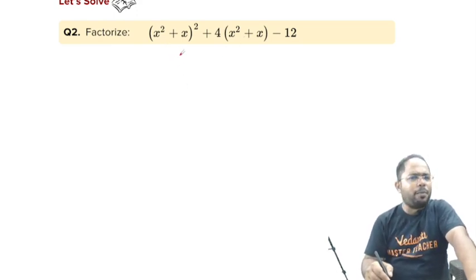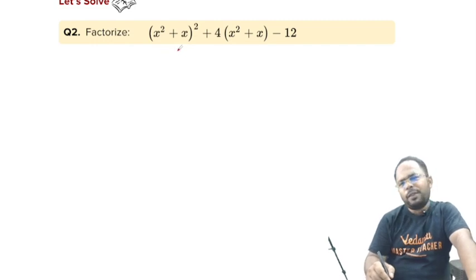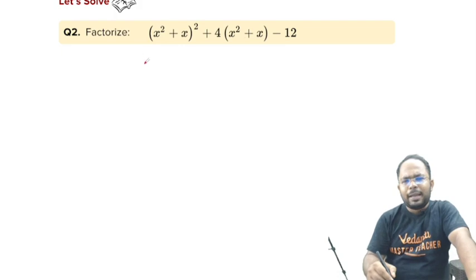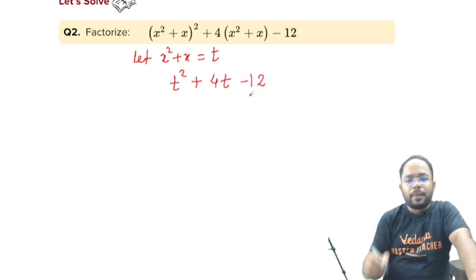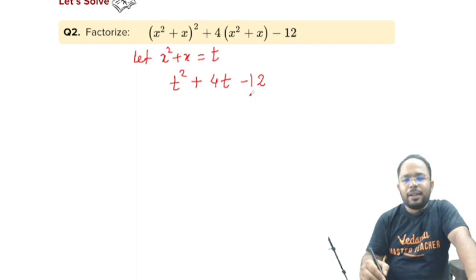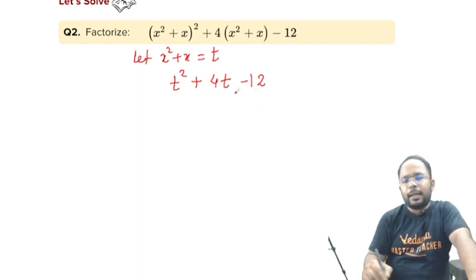Few of you might be thinking, sir, how we will do this x² plus x whole square? Let me give you a hint which will help. Here, we can consider x² + x, let us say, as t. We can simplify as t² + 4t - 12. Now, it is easier. We can do the middle term once again.